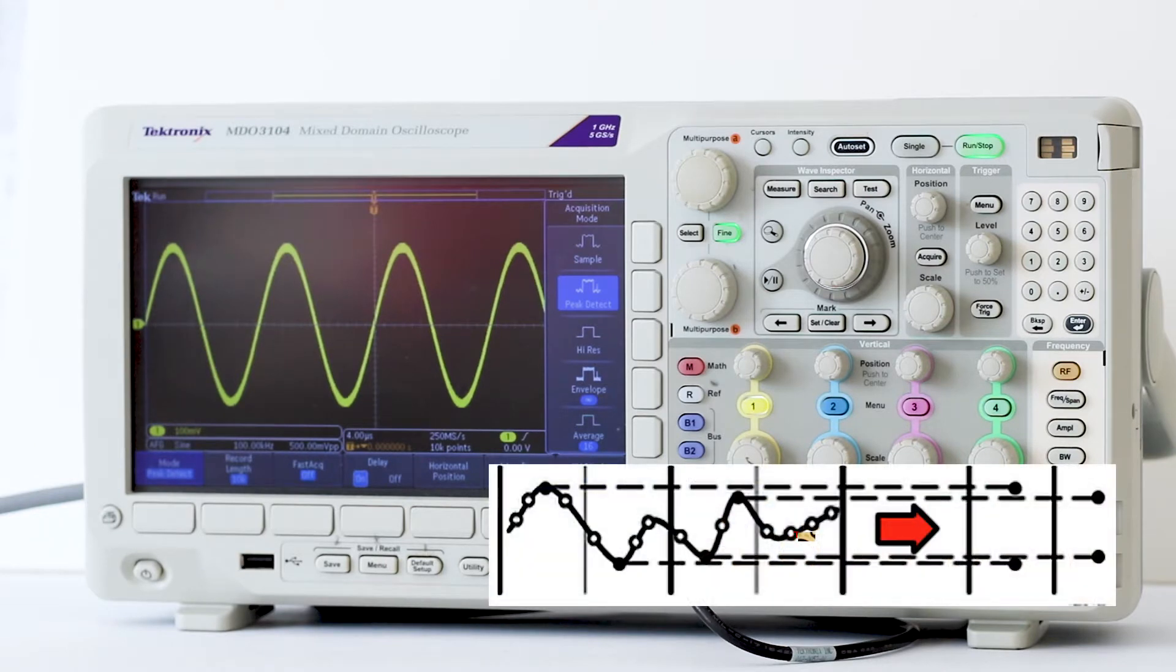Peak detect sampling mode uses the highest and lowest of all samples contained in two consecutive acquisition intervals. This mode works only with real-time, non-interpolated sampling. It is useful for catching high-frequency glitches.